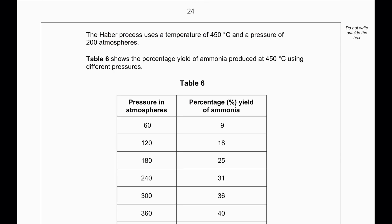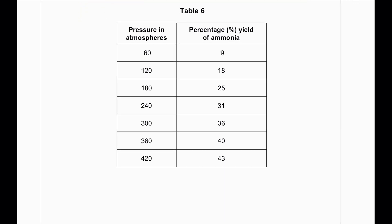The Haber process uses a temperature of 450°C and a pressure of 200 atmospheres. Table 6 shows the percentage yield of ammonia at 450°C using different pressures ranging from 60 to 420 atmospheres, giving yields from 9 to 43%. We can see that a general increase in pressure is associated with an increase in yield.